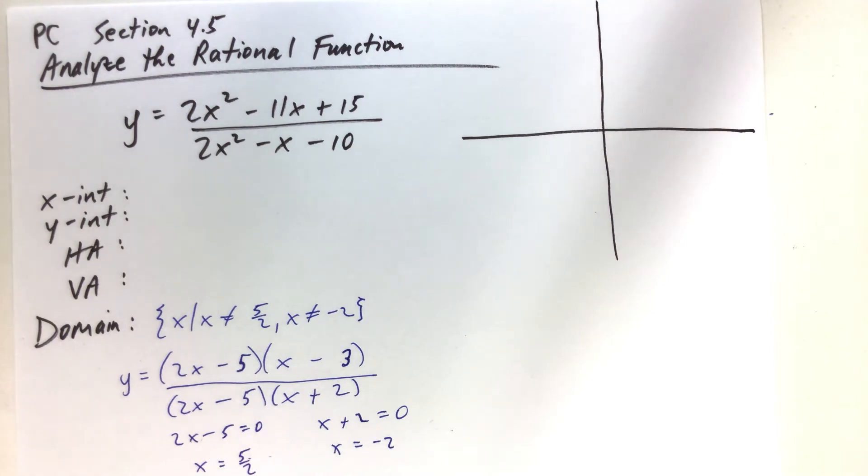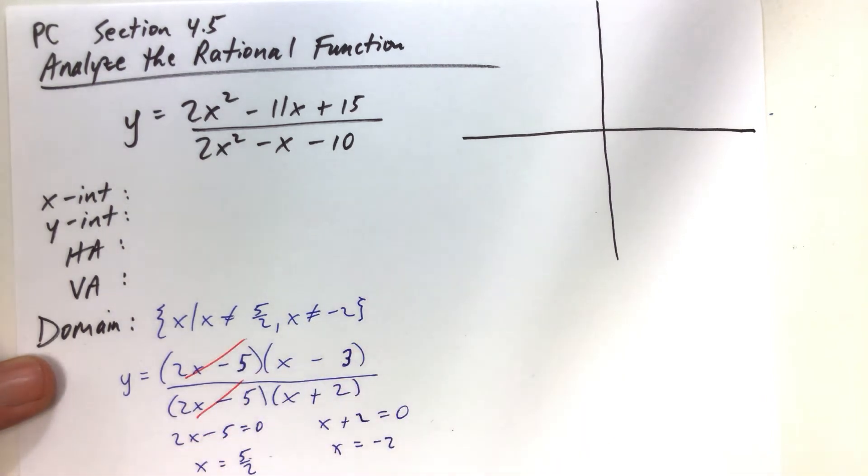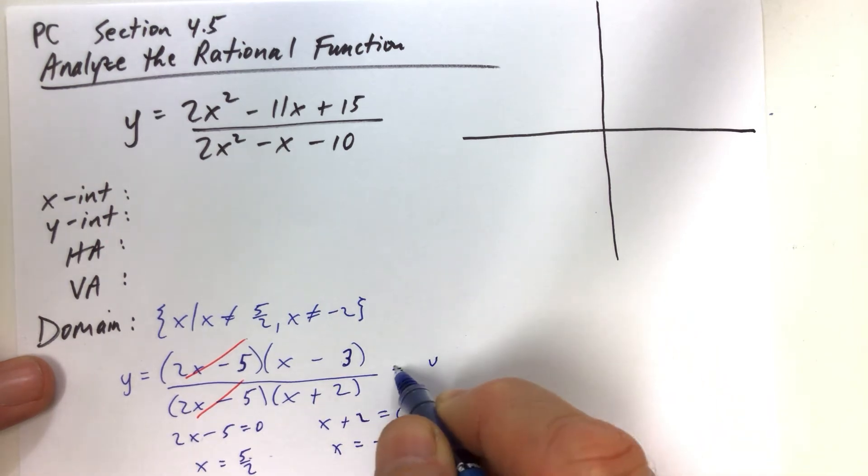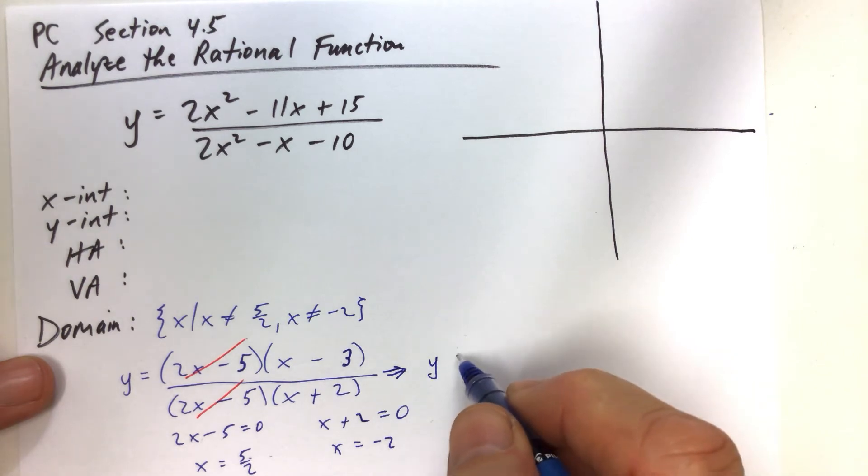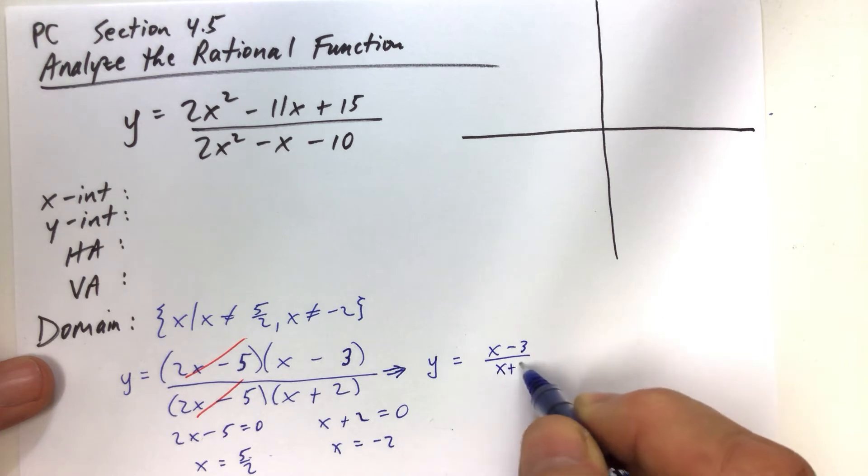Well, the answer to that is no. We don't have vertical asymptotes there. Why? Because vertical asymptotes can only be found after you convert that function to simplest form. So let's convert it. So we have, once we cancel those factors, we have y equals x minus 3 over x plus 2.